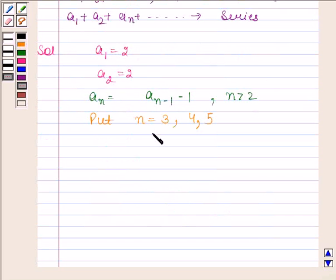By substituting n = 3 in this relation, we get a₃ = a₃₋₁ - 1 and this is equal to a₂ - 1.